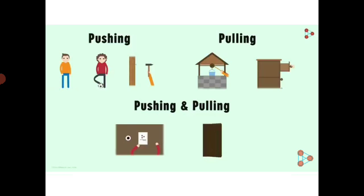Now look at some examples. When you use a hammer, it is pushing. Kicking a ball is also pushing. If you want to take water from a well, you will use a pulley to pull the water. For opening a drawer, you will use a pull. There are some actions which need both pushing and pulling. For example, opening a door — when you open the door you pull it, and when you close the door you push it. In the same way, when you want to read a book you pull it, and after reading you push it back to its position.